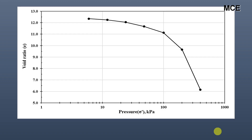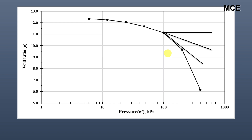To summarize the procedure for finding pre-consolidation pressure: select the point with maximum curvature; draw a horizontal line and a tangent at this point; bisect the angle between the horizontal and tangent line; extend the straight line portion of the curve; from the point where the extended part touches the bisector, draw a vertical line. The abscissa where this vertical line touches the horizontal axis gives the pre-consolidation pressure — in this case, 185 kilopascal.